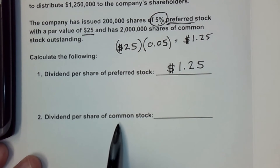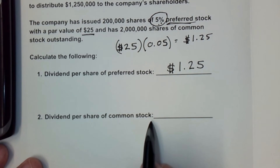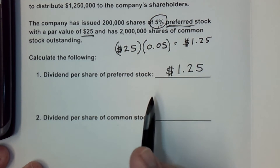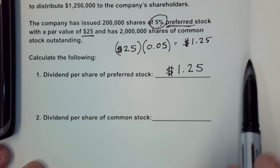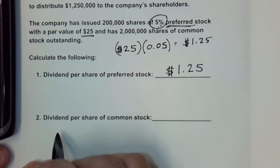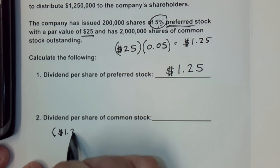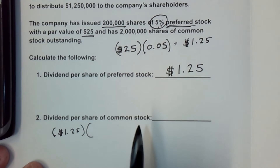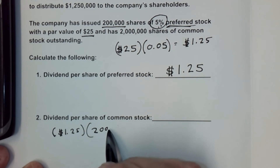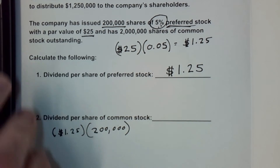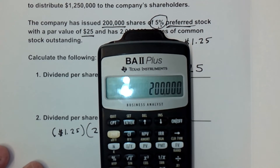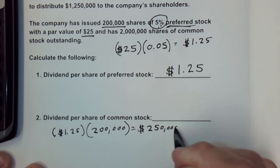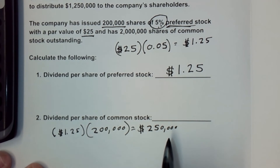Now let's move on to the common stock. As I mentioned, the preferred stock gets paid first, and then what is left over gets paid to the common stock. To calculate the amount for common stock, we first figure out how much of the $1,250,000 has been paid to preferred shareholders. Each preferred shareholder gets $1.25, and we multiply that by the 200,000 shares of preferred stock — giving us $250,000 paid to preferred shareholders.